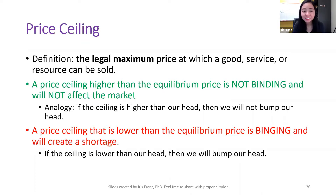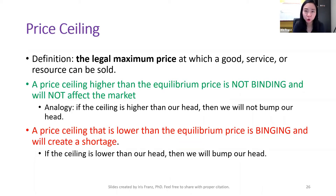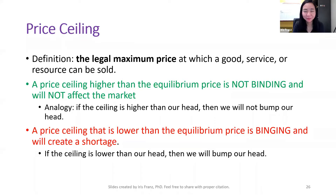If a price ceiling is lower than the equilibrium price, then it is binding and it will create a shortage. Think about our ceiling — if it's below our head, then we're going to bump our head, and that's not good.